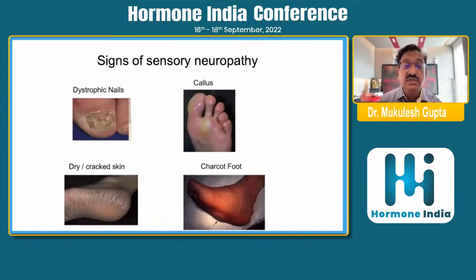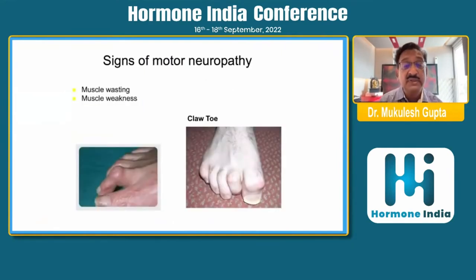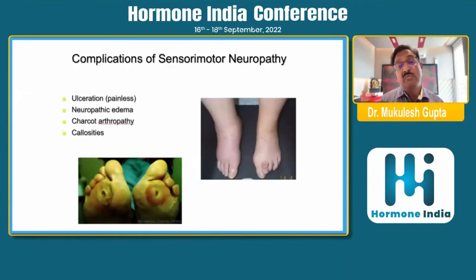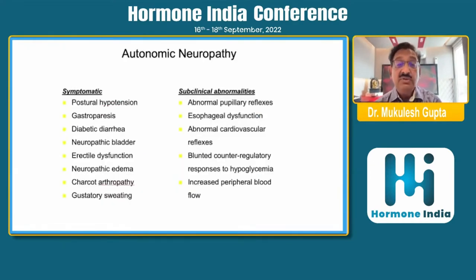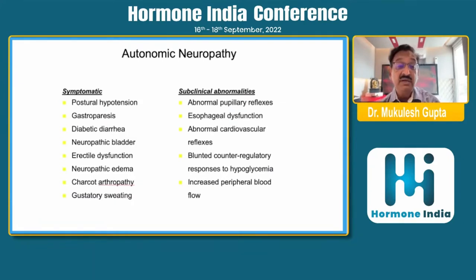Common signs seen in day-to-day practice: if sensory neuropathy is present — dystrophic nails, callous formation, dry or cracked skin, Charcot foot. If motor neuropathy — muscle wasting, muscle weakness, claw toe. Most commonly we see sensory-motor neuropathy in the form of painless ulcerations, neuropathic edema, Charcot joints, arthropathy, and callosities. We often forget about autonomic neuropathy; patients present with postural hypotension, gastroparesis, diabetic diarrhea, neuropathic bladder, and erectile dysfunction.